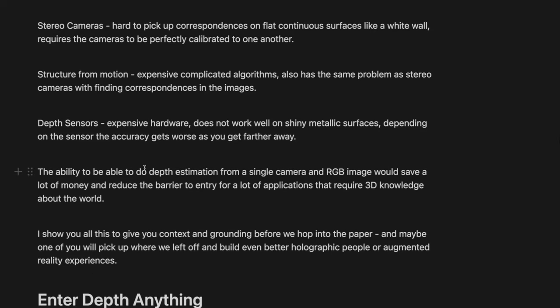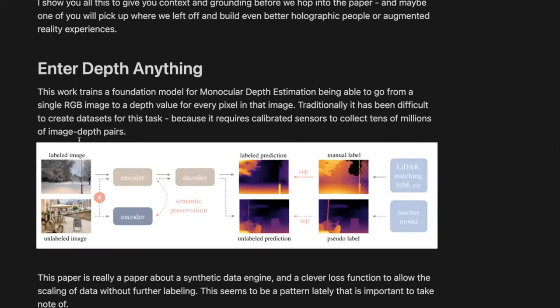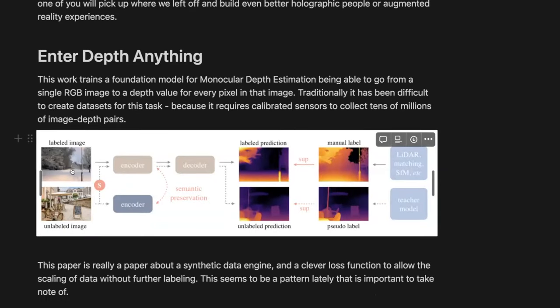Stereo cameras don't work great if you have flat surfaces like a white wall because they're trying to find matching keypoints in each image. Structure from motion has the same problem, plus it's a really expensive algorithm to run and usually has to be done offline. Depth sensors work well on flat white surfaces but don't work great on shiny metallic surfaces where the light might bounce in a bunch of different directions. What's cool about this paper is they take data from all three of these styles of sensors, combine them into a massive dataset, plus grab a giant unlabeled corpus of data, to train a model that goes from a single RGB image to a depth map.